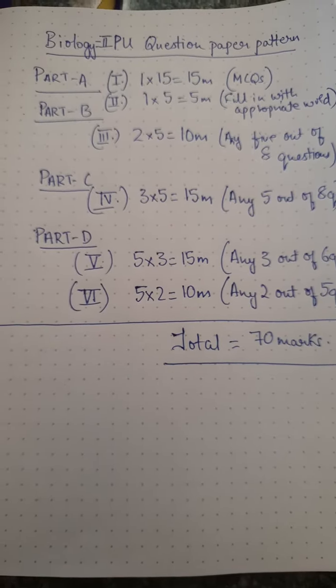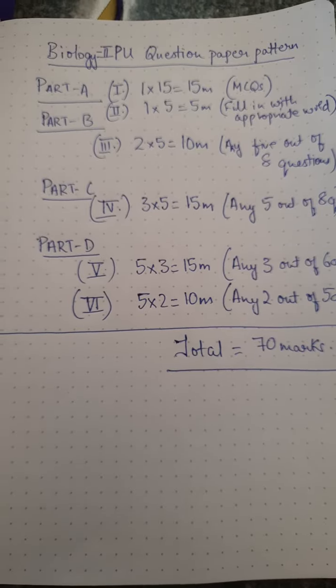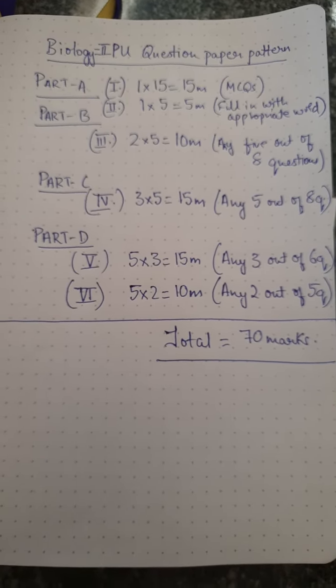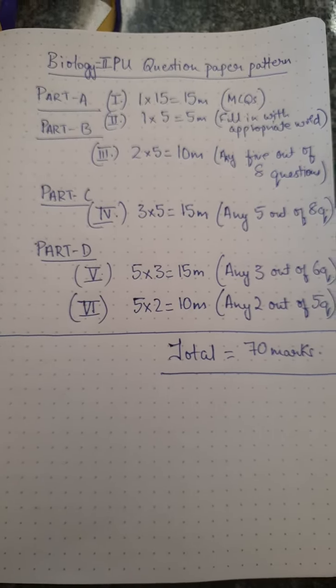Hi friends, today I want to discuss the second PU question paper pattern for Biology. It has been made very easy for students and is quite student-friendly. Part A consists of two sections. The first is Roman numeral I: